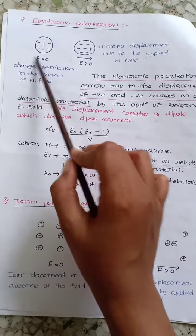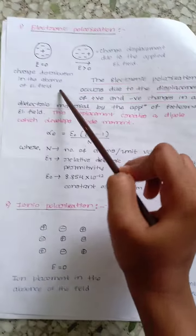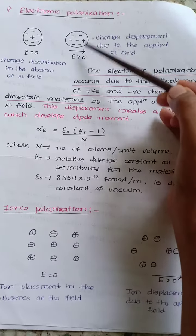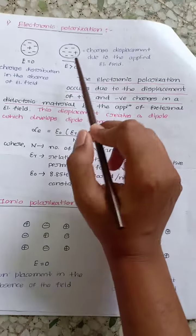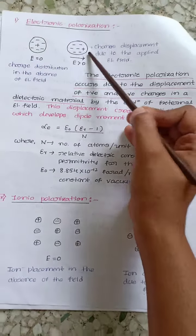This is the diagram for charge distribution in the absence of electric field. When we apply electric field to it, the displacement of positive and negative charges takes place.